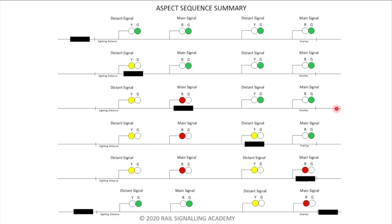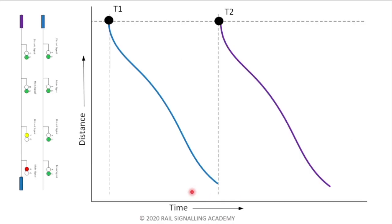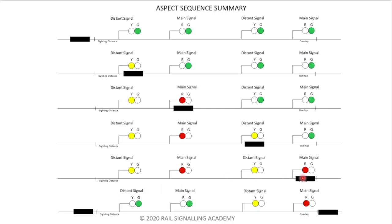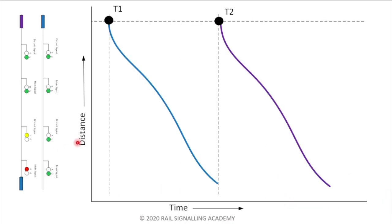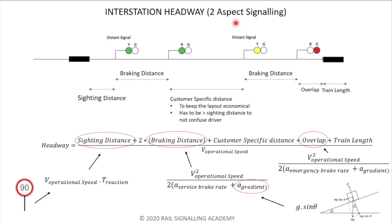Here is a summary slide — you can pause and think about it. Now let's look at the time-distance graph. I'm picking up the first scenario and the last scenario to keep the diagram easy to read. The blue train arrives and I plot it on the time-distance graph. The moment the blue train clears the overlap is when I ideally want the purple train to arrive at the sighting distance. Headway in this scenario is t1 minus t2.